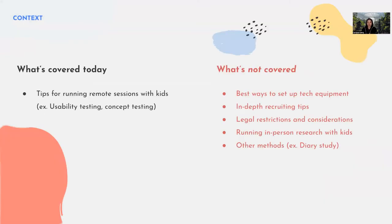What's covered today is some practical tips for running remote sessions with kids — this could be used for one-on-one usability testing or testing different concepts. What isn't covered: the best ways to set up technology, in-depth recruiting tips, legal advice (which differs depending on where you are), dynamics of in-person research, or other methods like how to run diary studies with kids.